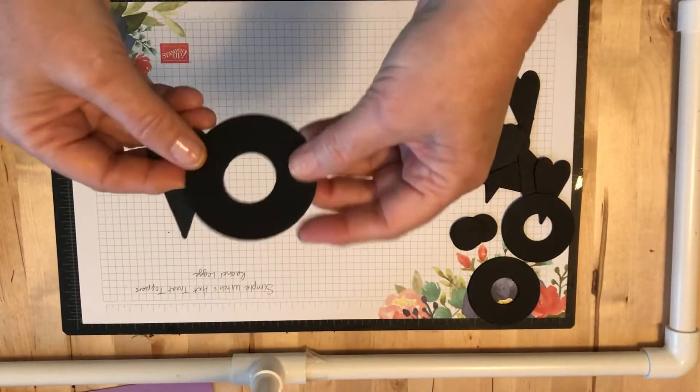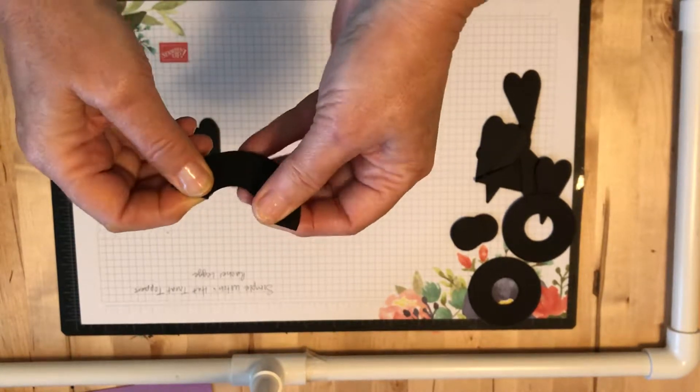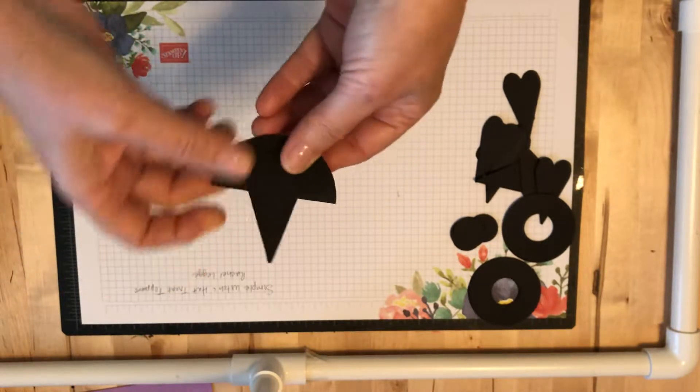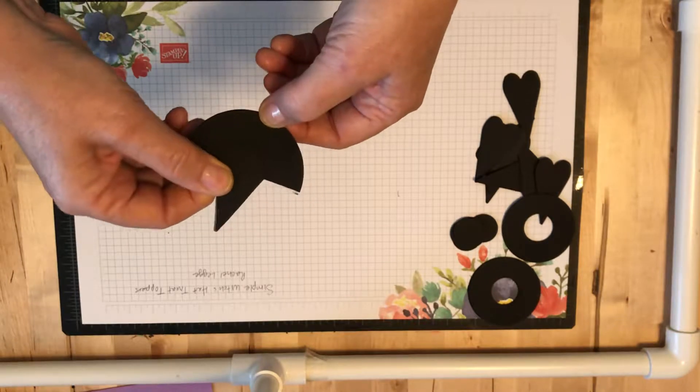So then if you take your circle that you have and you fold that in half, and then stick your triangle up through there, you can see that makes just a really cute little witch's hat.